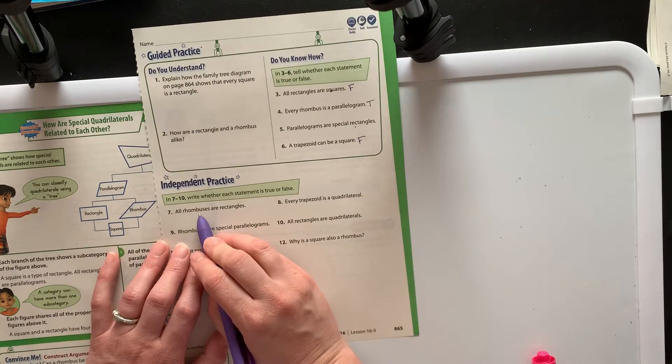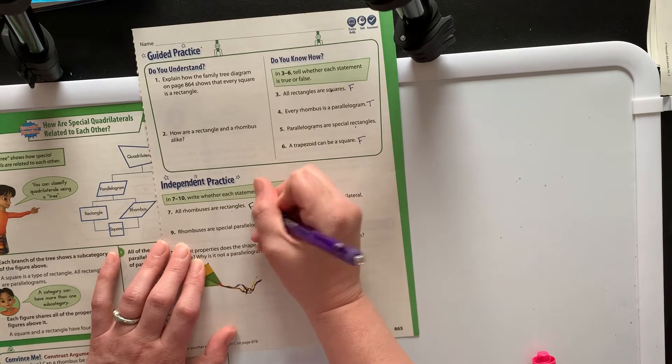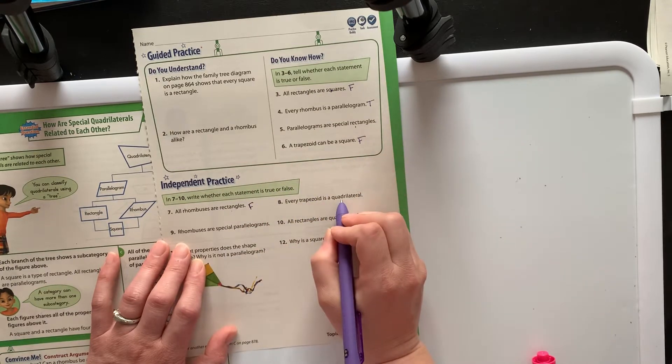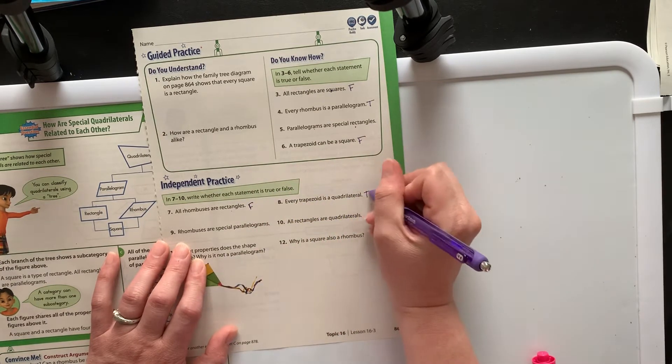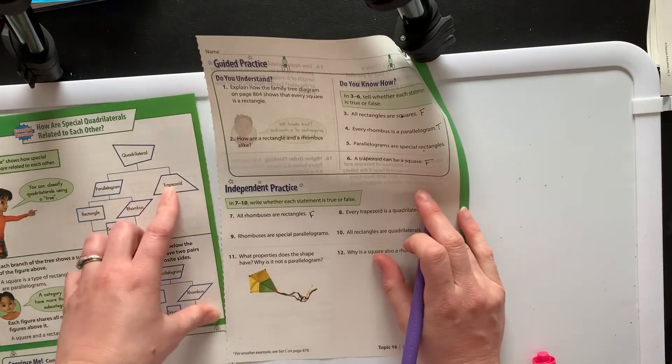All rhombuses are rectangles. No, that doesn't work. Every trapezoid is a quadrilateral. Yep, because if you look, the trapezoid falls under the quadrilateral.